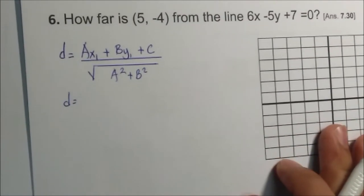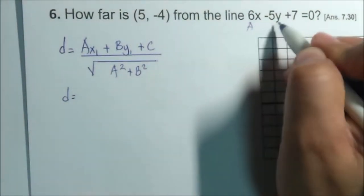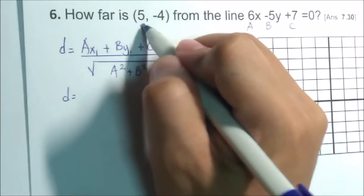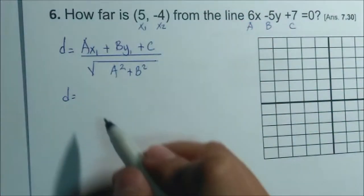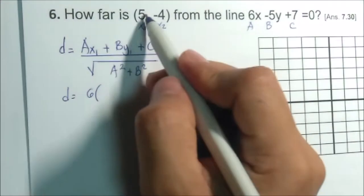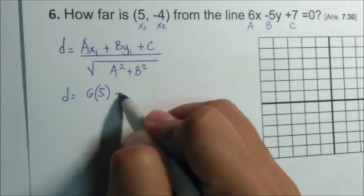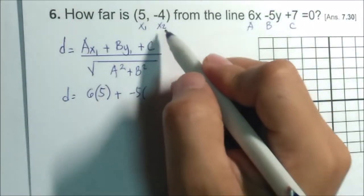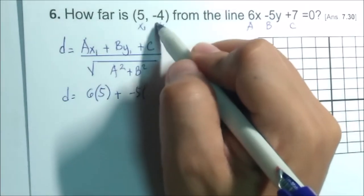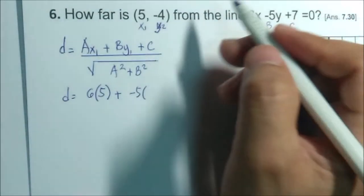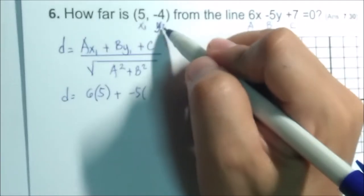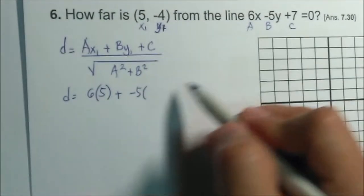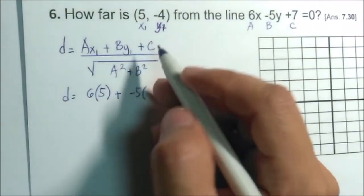So our A is 6, B is negative 5, C is 7. This is x₁ and y₁. So A is 6 times x₁, which is 5, plus B—negative 5 times y₁, which is negative 4.